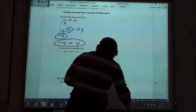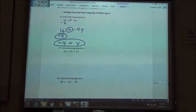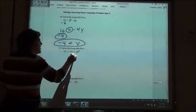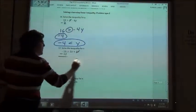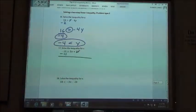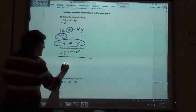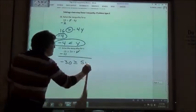Number 17. What do we do to solve that one? Subtract the 11 first. Negative 19 minus 11 would be negative 30. Negative 30 is greater than or equal to 5v.